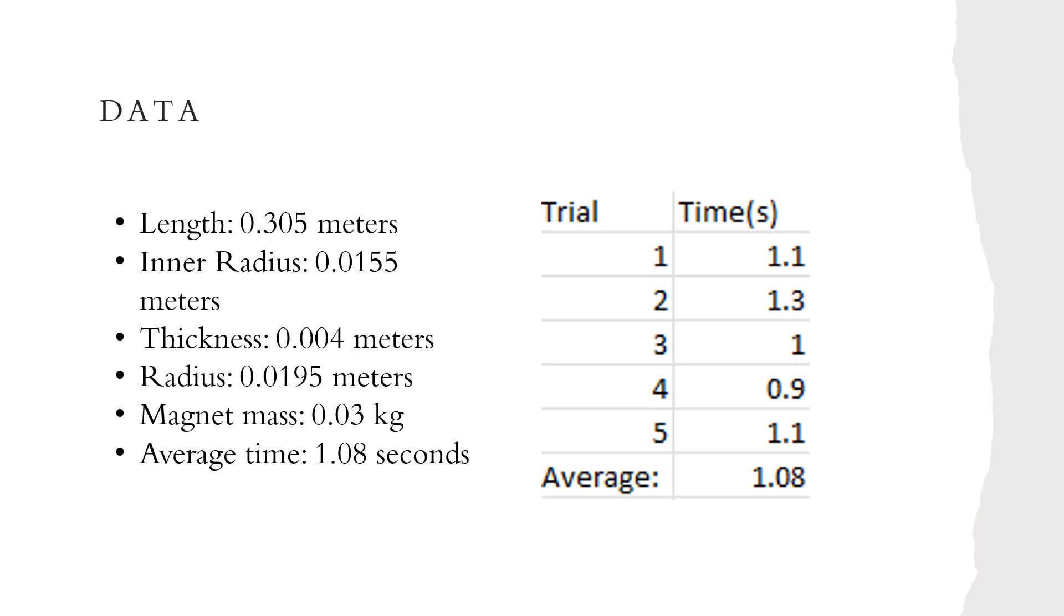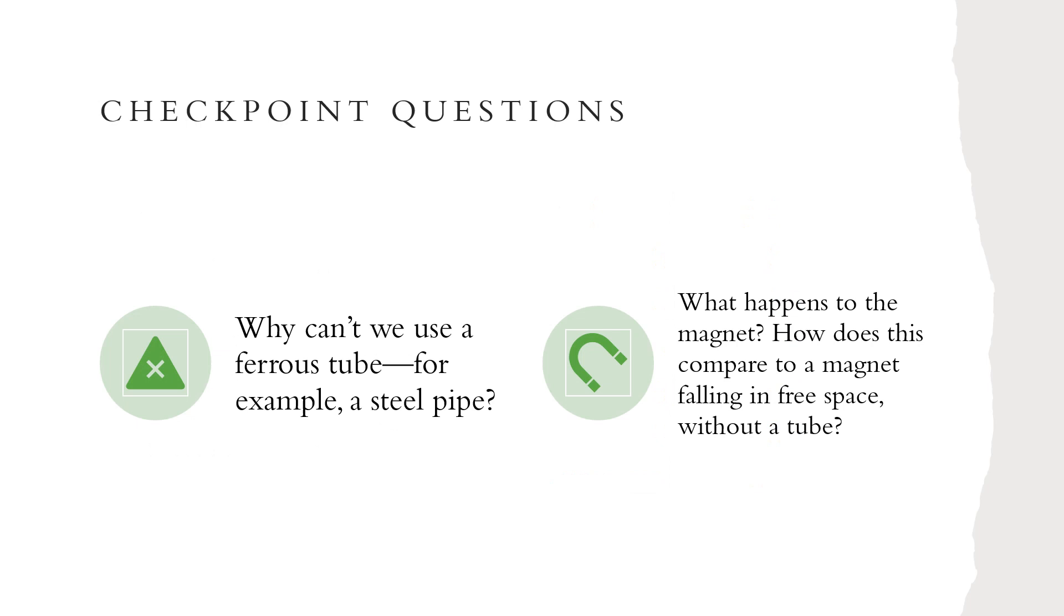For my experiment, here is a list of all the measurements taken from the roll of aluminum foil that was used in the coding data. On the right, we see my five trial times of dropping the magnet through the aluminum foil in which the average time came to be about 1.08 seconds.